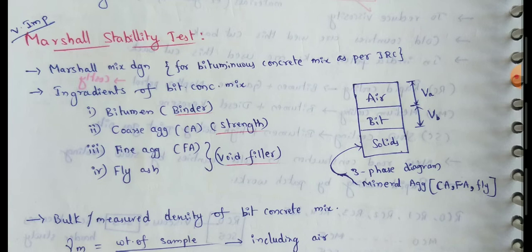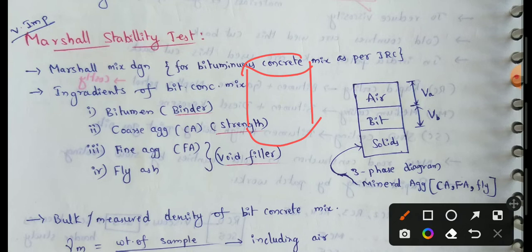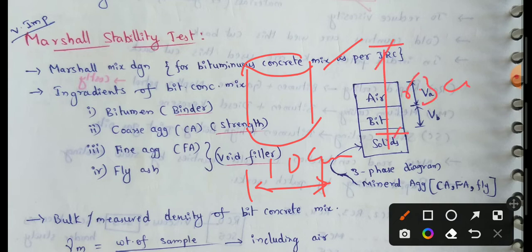For the Marshall Stability Test, it is a type of Unconfined Compressive Strength Test. The test uses a cylindrical specimen with a diameter of 10 cm and a height of 6.3 cm. The specimen is compressed radially at a constant rate of strain of 5 cm per minute. This test is conducted at 60 degrees Centigrade.